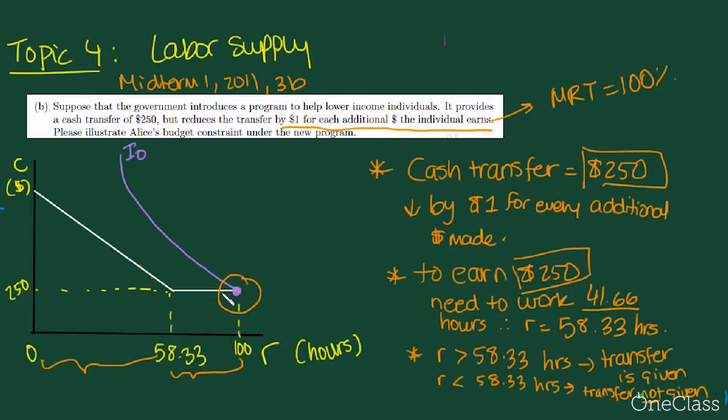And if she works for, let's say, if she takes 98 hours of leisure, she can still get the same amount of money. So if she gets $250 at this point, then she won't have incentive to give up leisure at this point. So she'll just remain at this point.